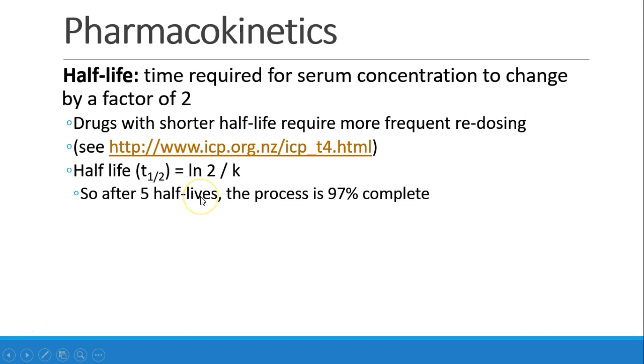You should probably know that half-life is calculated as the log of 2 divided by k, where k is the rate constant that describes the elimination. This is just significant because after five half-lives, if you do the math, you'll see that the process is about 97% complete. So usually five half-lives is taken as an amount of time sufficient to clear a drug out of a system.